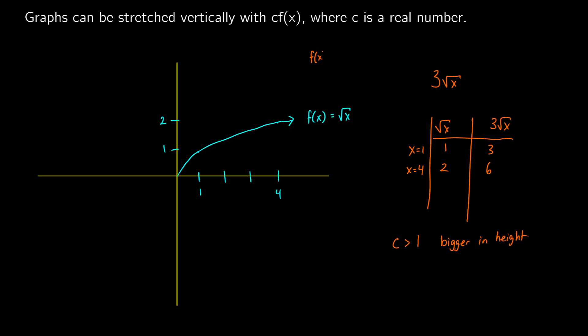Let's do f of x equals 3 times the square root of x. At x equals 1 we're up at y equals 3. At x equals 4, y is all the way up at 6. So we take all of our points and shift them up by multiplying by 3. The point 4, 2 now goes to 4, 6.